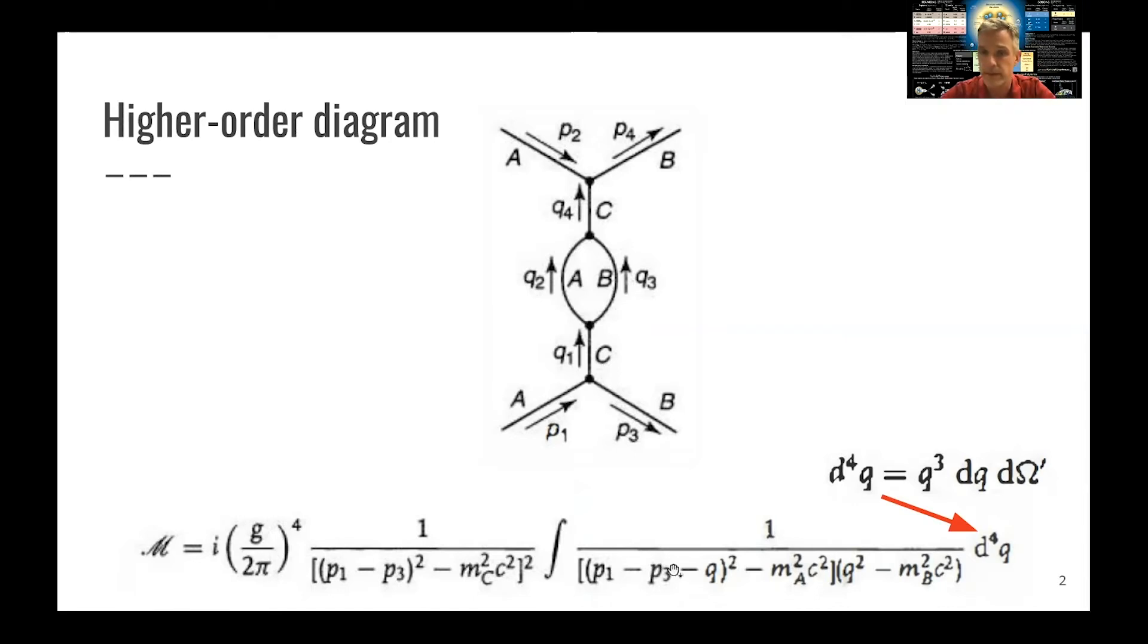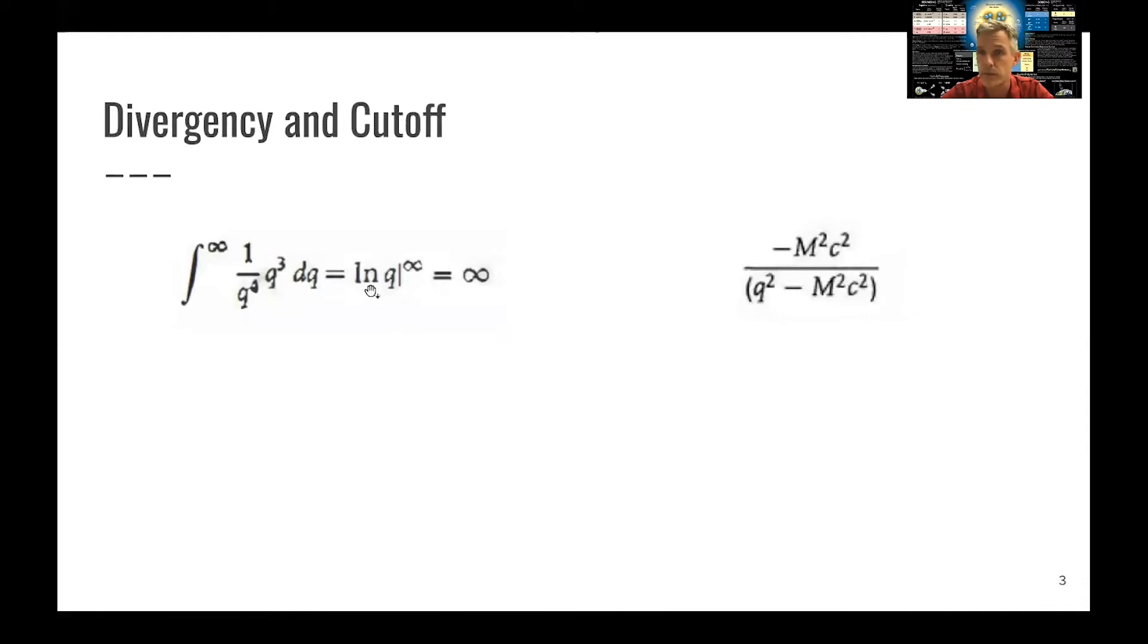So let's investigate. The first part is this finite element here, which we can rewrite as q cubed times a finite element dq times all the angles which we have to integrate around. If you look in this fraction here, we find a q squared times q squared. If you go to just very large values of q, that's the only thing which remains. So we have an integral 1 over q to the fourth power times q to the third power. And then we have to integrate this from 0 to infinity. If we do this, this resides in the logarithmic term. And if you have this evaluated at infinite, we find that it diverges. So the result of the integral is infinity.